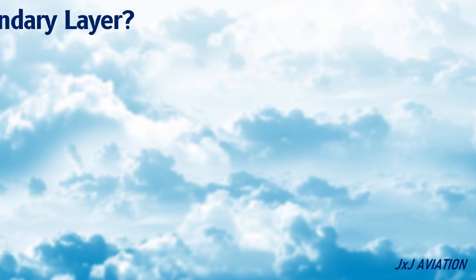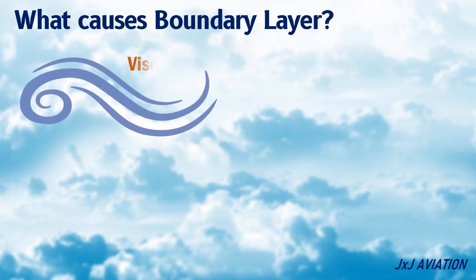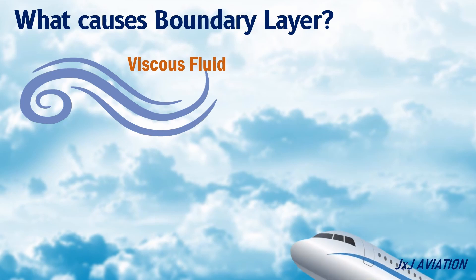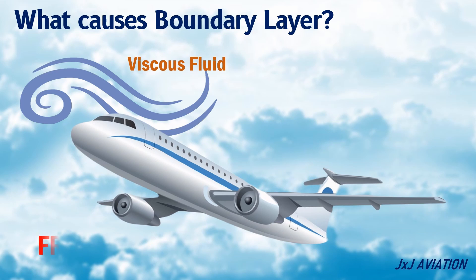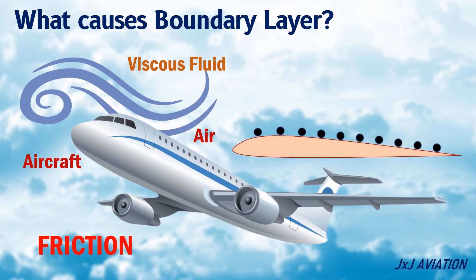What causes a boundary layer? Air is a viscous fluid. This means that when an object such as an aircraft moves across the air, there will be friction between the surface of the aircraft and the air.